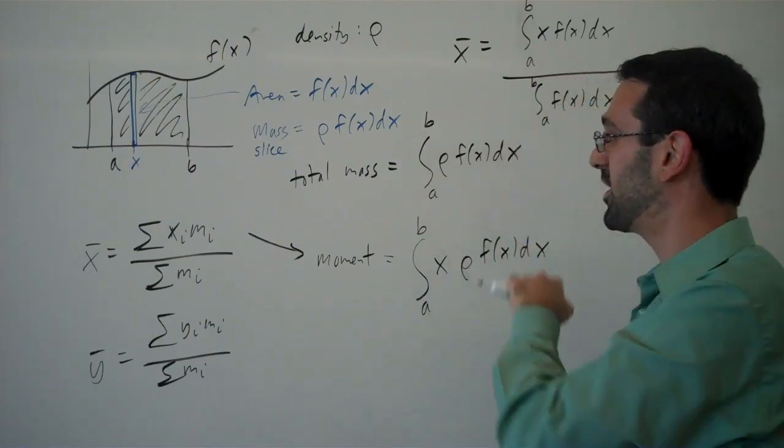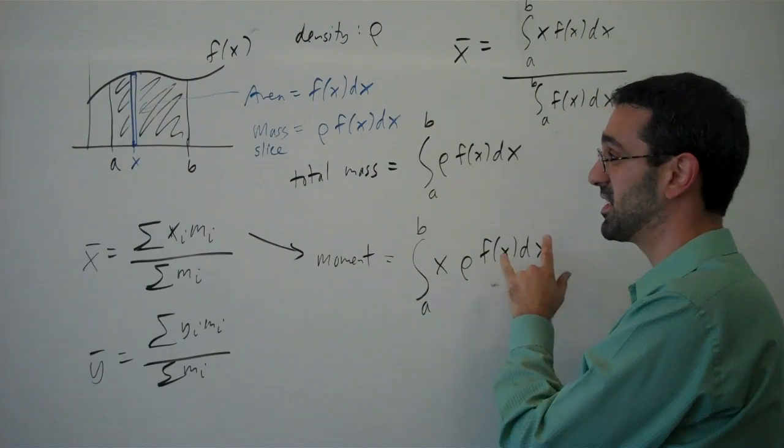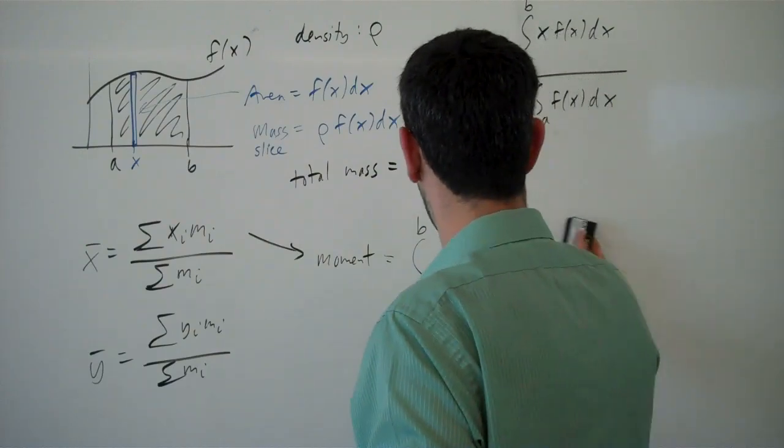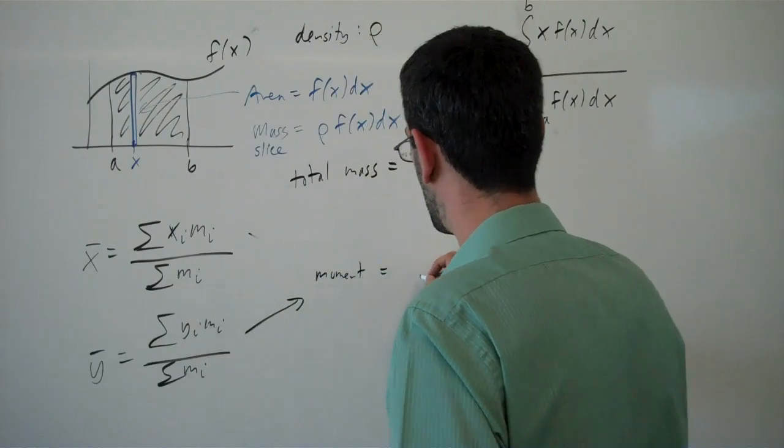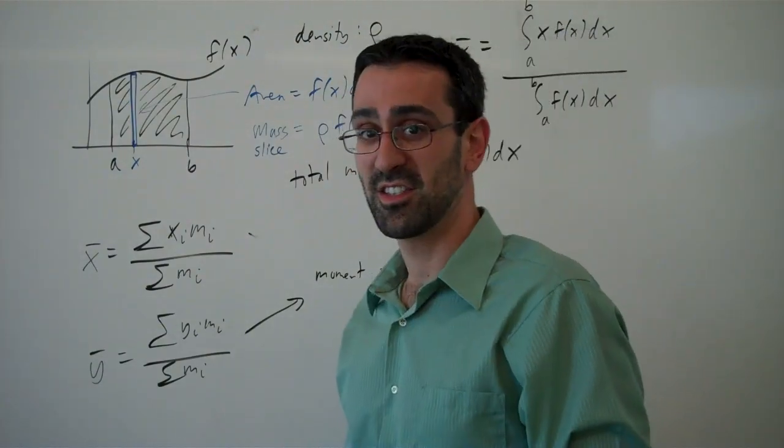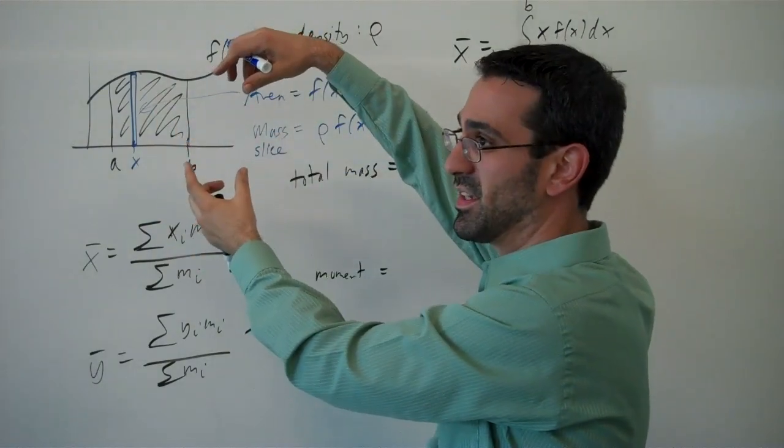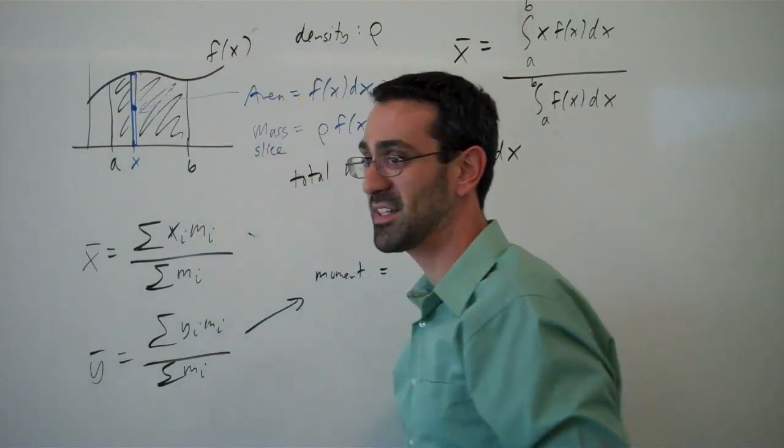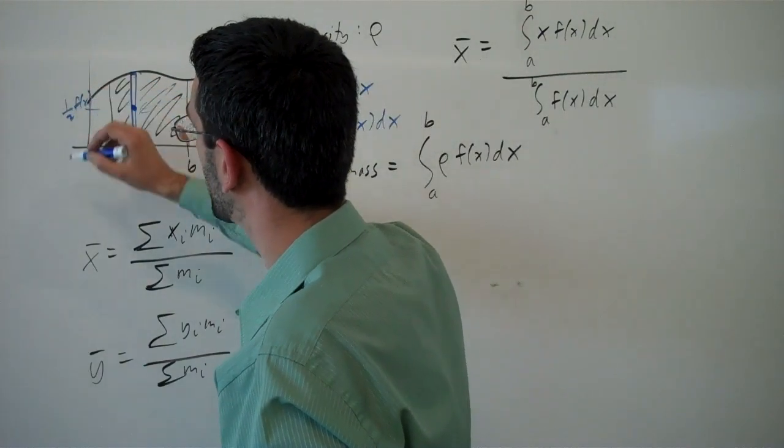Now that's for x bar. With the y bar, things become a little more complicated. Here we can just say x times the slice, because this x value is the location of that mass. But with the y bar, the moment's going to change a little bit. The moment is a little trickier because this isn't at one specific y value. So the trick to it is, since this is a rectangular slice, the mass of it will be uniformly distributed. And we can imagine it as if it was a point mass located directly in the center, which would be at one half f of x.